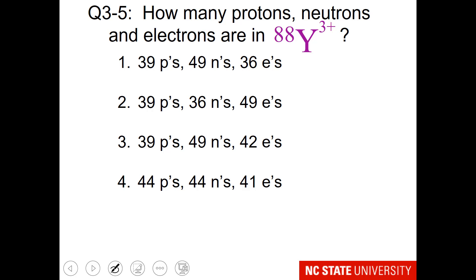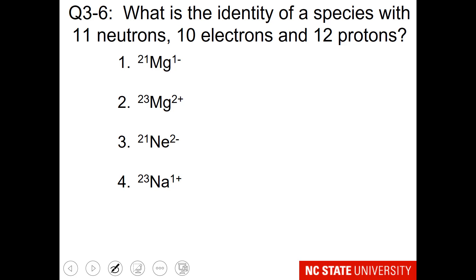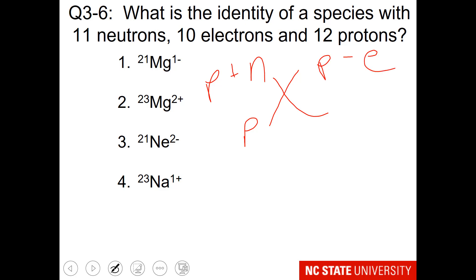Here's another question — follow the same steps from the previous one. Here's a backward question: we want to know the identity of a species with 11 neutrons, 10 electrons, and 12 protons. Don't forget that whatever our symbol is, the atomic number goes here, protons plus neutrons go here, and the charge is protons minus electrons.